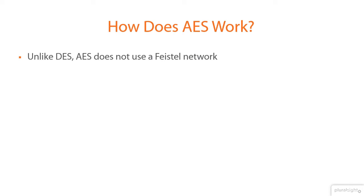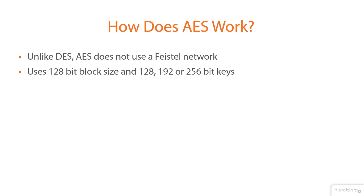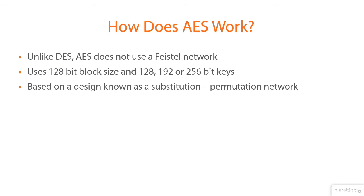Unlike its predecessor DES, AES does not use a Feistel Network. AES is a variant of the Rijndael Cipher, which has a fixed block size of 128 bits and a key size of 128, 192, or 256 bits. AES is based on the design principle known as a Substitution Permutation Network, which is a combination of both substitution and permutation and is fast in both hardware and software.